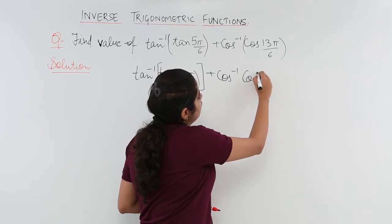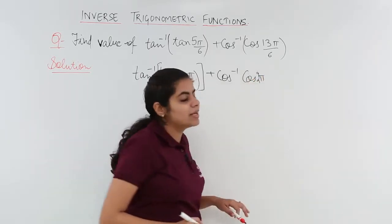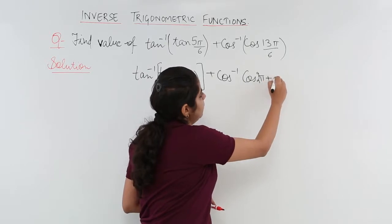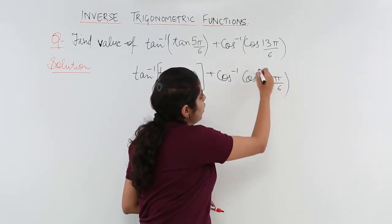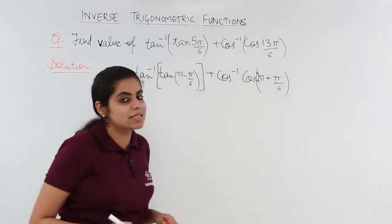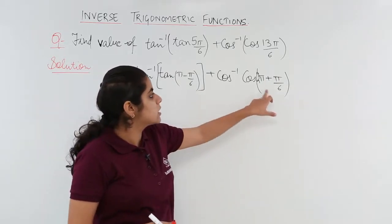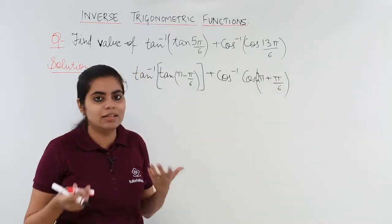13π by 6 can be written as something else. What can it be written as? 2π plus π by 6. Yes, 2π plus π by 6. Because if you write 13π by 6 as 2π plus π by 6, 6 to the 12 and 1π is added that means 13π.